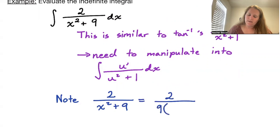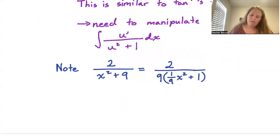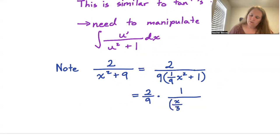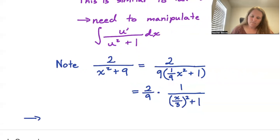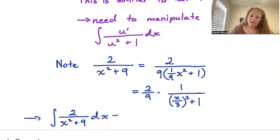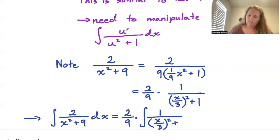So 2/(x² + 9) is 2/9 · 1/((1/9)x² + 1), which is equivalent to 2/9 · 1/((x/3)² + 1). Therefore, the integral of 2/(x² + 9) dx is the same as 2/9 times the integral of 1/((x/3)² + 1) dx.